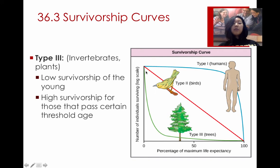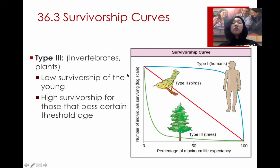The last one is Type 3, which is characterized by invertebrates and plants. These are generally species that tend to have a lot of offspring but do not take care of them. Because they have a lot of offspring and don't take care of them, there's a very low survival rate. Many of the offspring die, but the ones that do survive past a certain age tend to have a higher chance of survival. The percentage change after that point is very little, so if you survive up to that point, you're most likely to survive for the full lifespan.